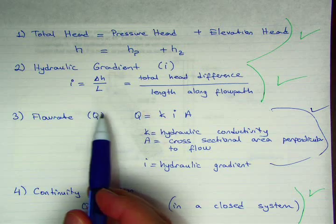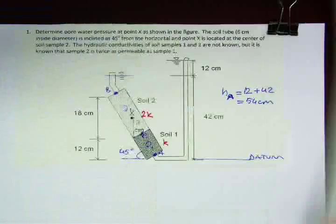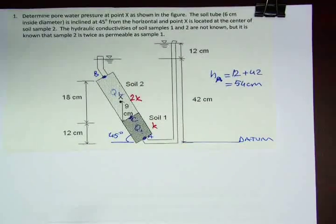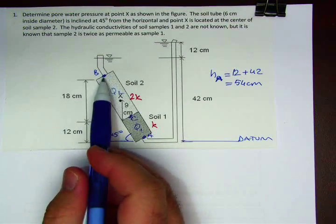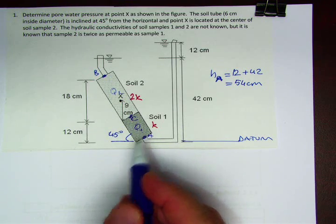Second is the flow rate equation, and lastly the continuity equation. Now I will start with defining the total head at the two ends of the soil.